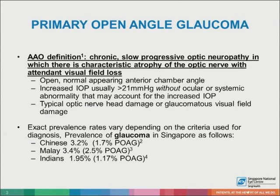The AAO definition of primary open angle glaucoma is that of a chronic, slow progressive optic neuropathy in which there is characteristic atrophy of the optic nerve with attendant visual field loss. The anterior chamber angle is open and appears normal. There is often an increased intraocular pressure, usually more than 21 millimeters of mercury, without ocular or systemic abnormalities that may account for the increased intraocular pressure. Typically, optic nerve head damage or glaucomatous visual field damage is present.